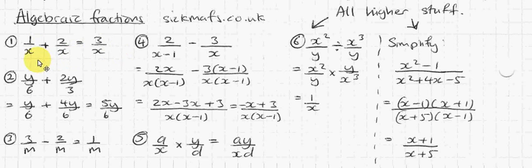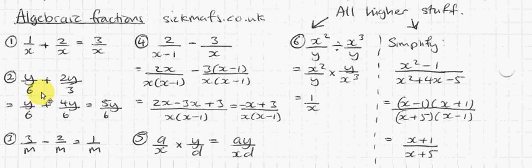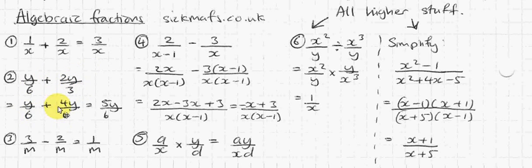Assuming you know how to do normal fractions, we'll carry on. You've got 1 over x plus 2 over x equals 3 over x, because you've got a common denominator — that means you can just simply add the tops. Now over here we don't have a common denominator; we've got a 3 and a 6, so this can be doubled to make 6. If I double the bottom, I should double the top, so I get 4y over 6, and then adding them together you get 5y over 6.